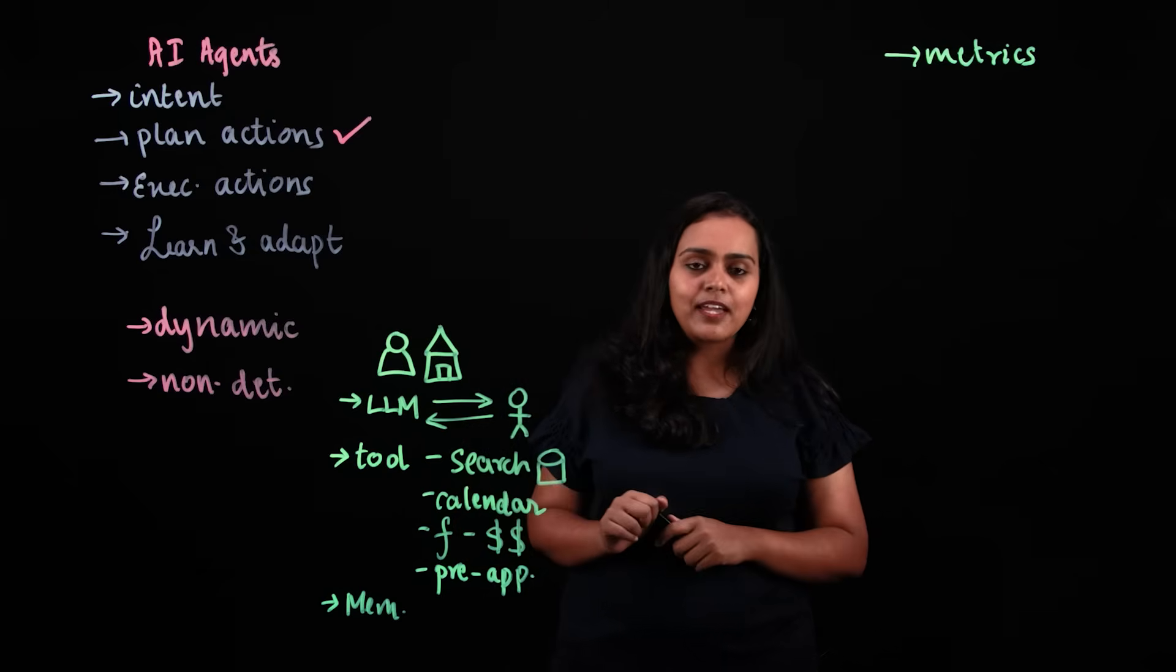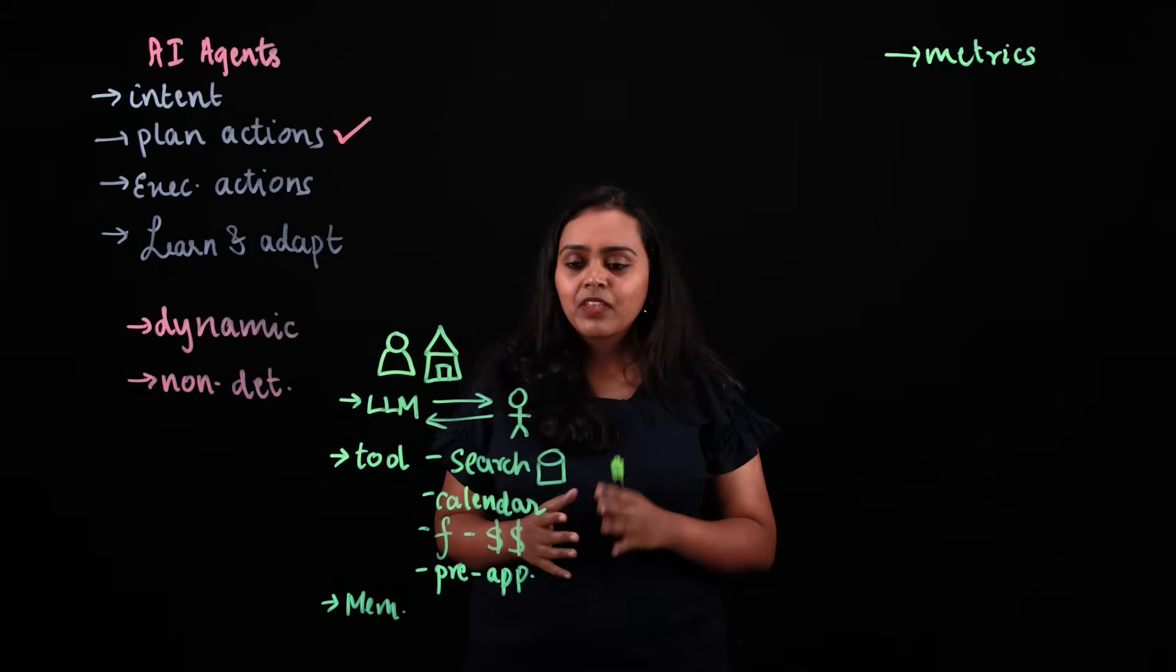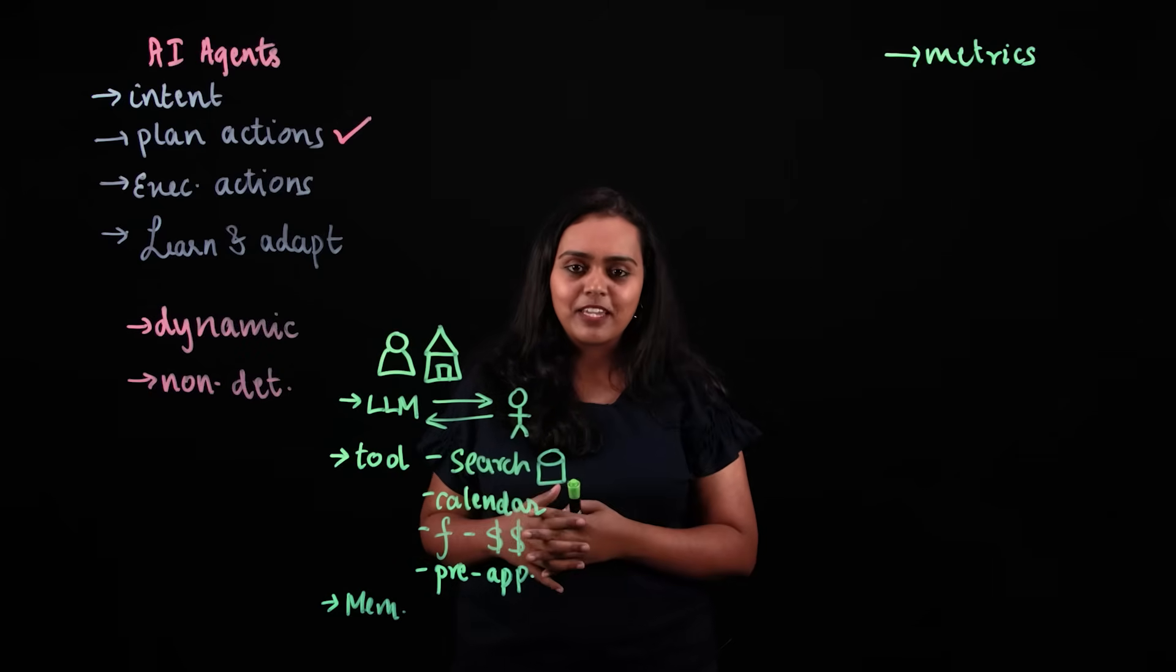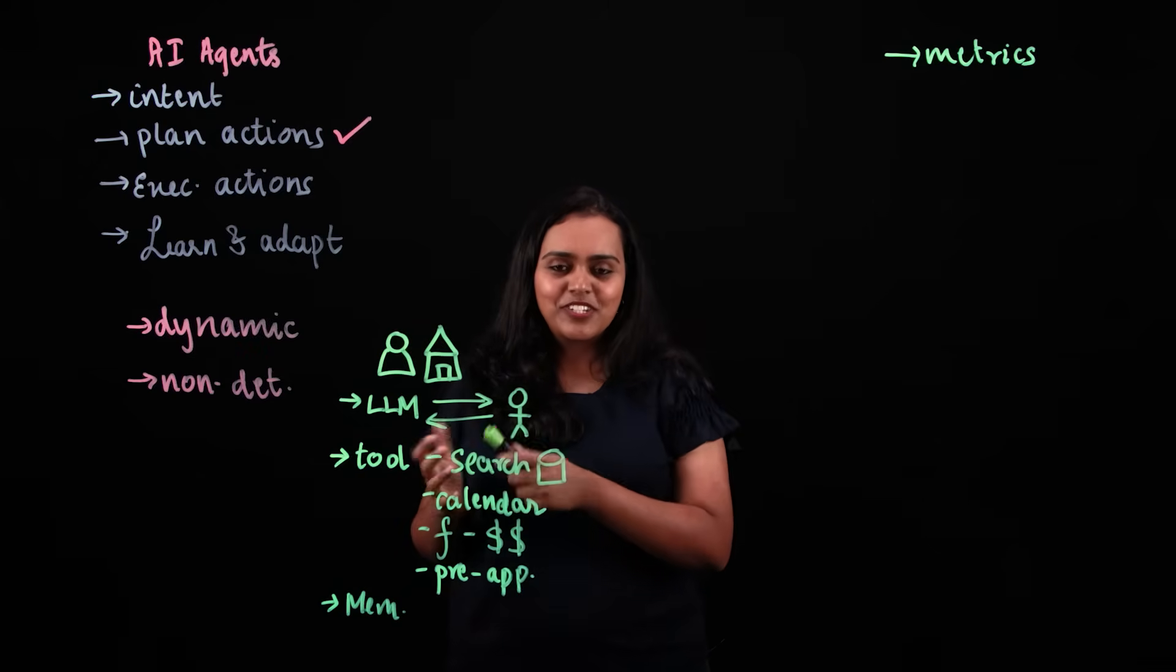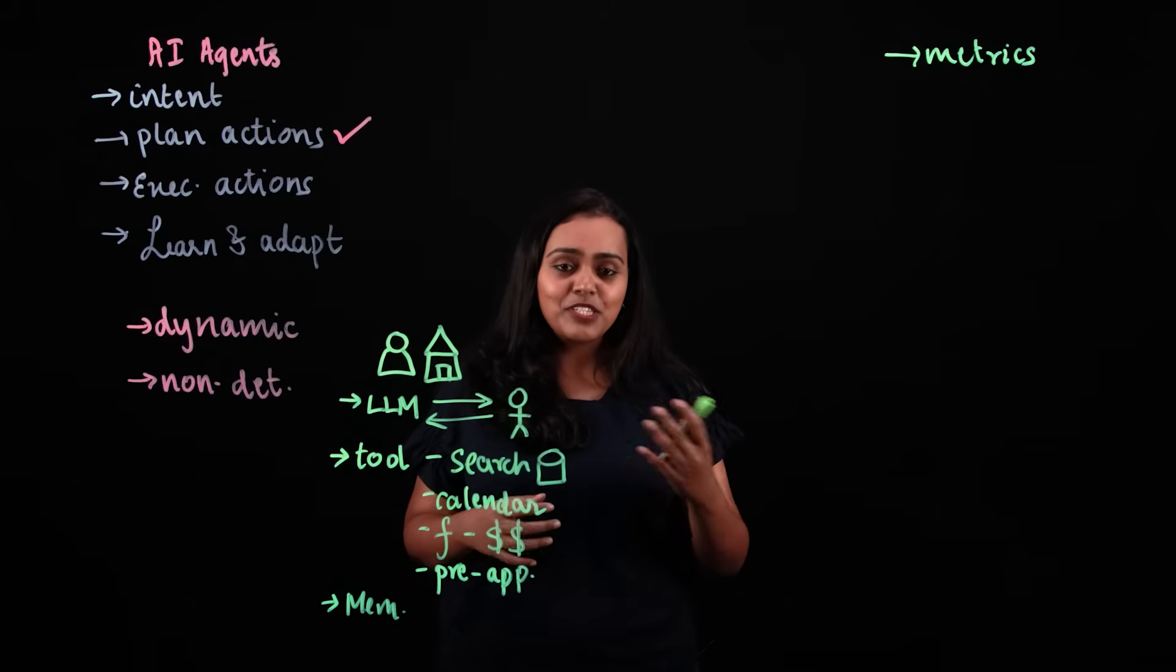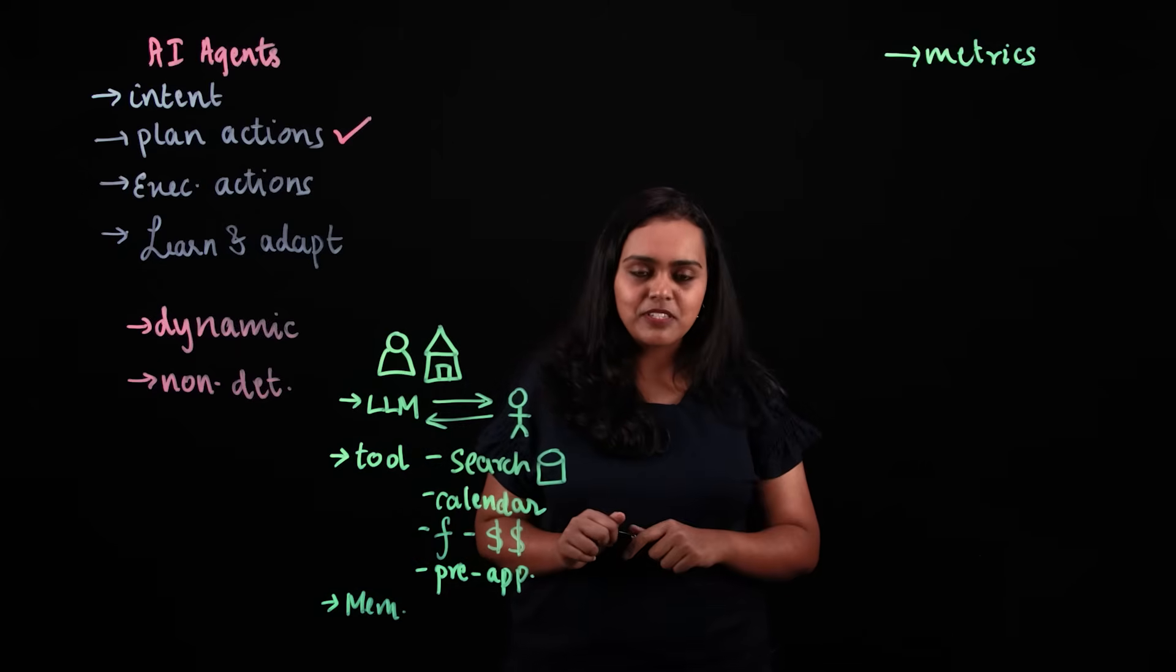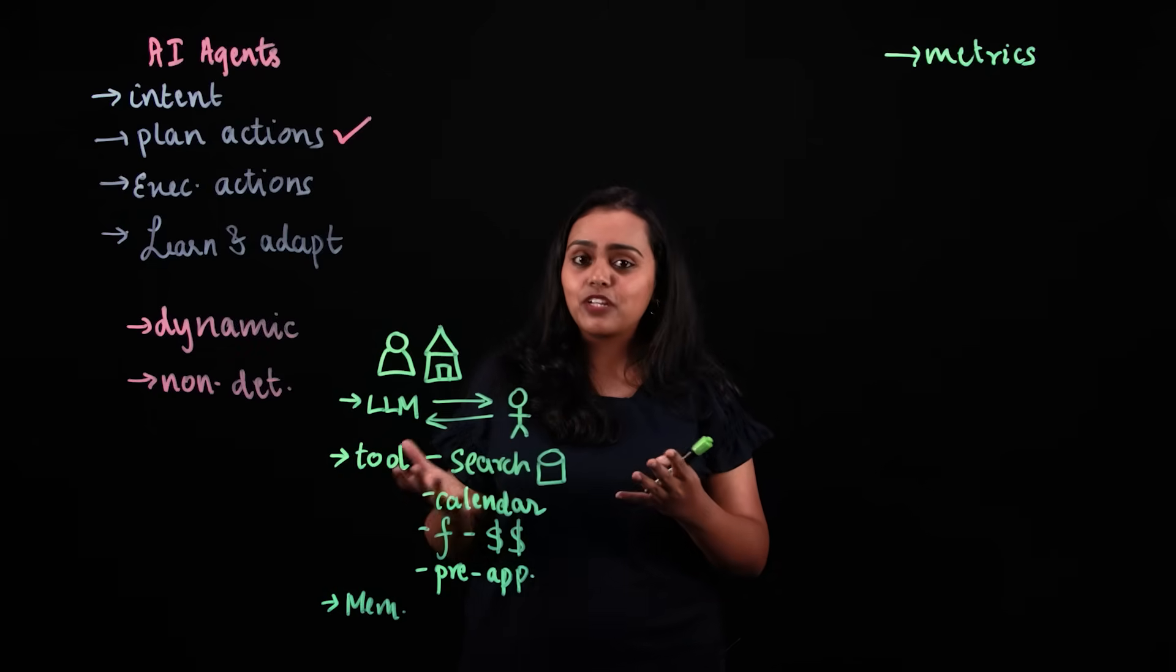You could also be looking at adversarial robustness because it's really important. Let's say you have a customer who wants to scam your application, who wants to be a fraud. They might trick your agent into divulging information that it's not supposed to be divulging. In that case, it's very important that you configure adversarial robustness to make sure that your agent is behaving predictably in different kinds of scenarios.